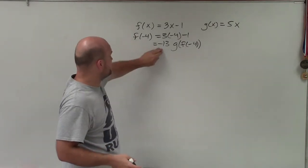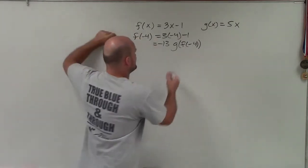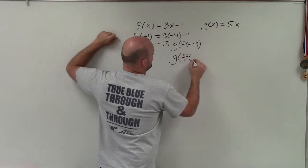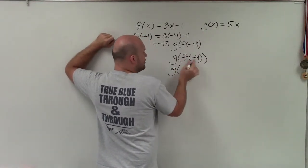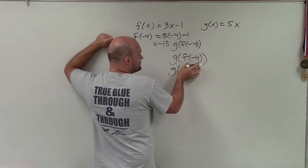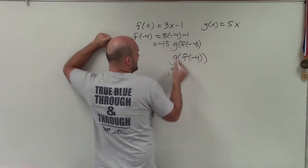Then I'm pretty much taking that value, f of negative 4 is equal to negative 13. So g of f of negative 4, I can now rewrite that as g. We know that now f of negative 4 is equal to negative 13.